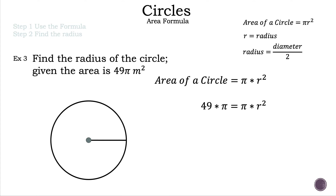We substitute 49 pi into the formula on the left-hand side for area, setting it equal to pi times radius squared. Now we solve for r. Since we have pi times on the right side, we do the inverse — divide — so we divide the right-hand side by pi. Pi divided by pi is 1, so those cancel. We do the same to the left side: pi divided by pi cancels, leaving us with 49 equals r squared.